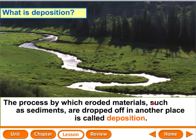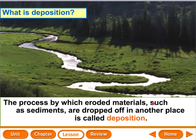Last one: wind. Wind erodes rocks, smooths them out, and moves sand or sediment from one place to another. Wherever the wind slows down and drops that material off, there's deposition. So we've talked about gravity, glaciers, running water, waves, and wind — all causes of erosion and deposition.